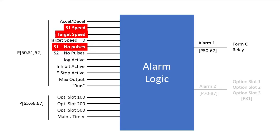But we only want to see alarms if we are not ramping up or down, the inhibit switch is not active, the target speed is not zero, or if we are not jogging.